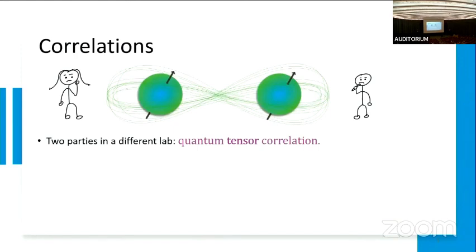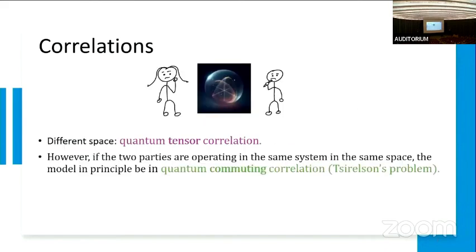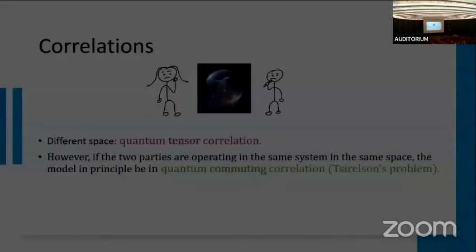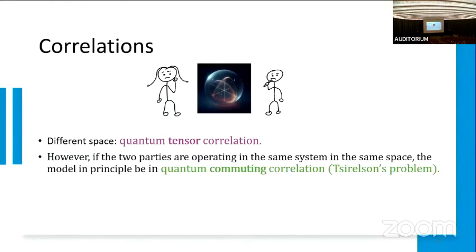Just to explain for a second why we care about commuting correlations: imagine you have an experiment where the two parties are far away. In this case, the model entanglement is often modeled as the quantum tensor correlations. However, as soon as we force the two parties to be operating the same system in the same space, the model we have is actually not clear. By some QFT axioms, it could be the case that this is actually the commuting operator model of entanglement, and this is known as the Tsirelson problem. If you're interested in this, I recommend you talk to the actual physicist. This is second-hand information I got.